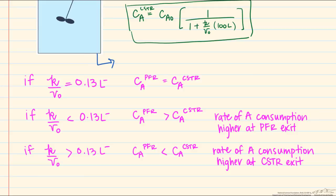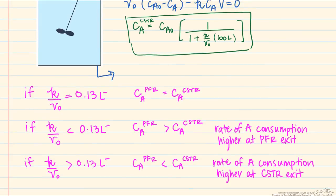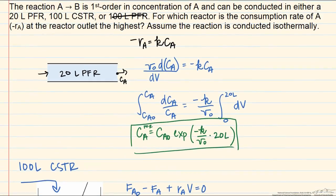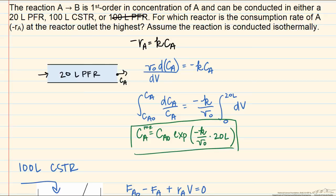For a first-order reaction — or indeed any positive-order reaction — we cannot conclude for certain whether a much smaller PFR (20 liters) or a larger CSTR (100 liters) will have the higher outlet concentration and therefore the higher rate. We could conclude that a 100-liter PFR compared to a 100-liter CSTR would always have a lower outlet concentration and lower rate. But when the volumes are different, which reactor has the higher outlet concentration and higher reaction rate depends on the value of the kinetic parameters.